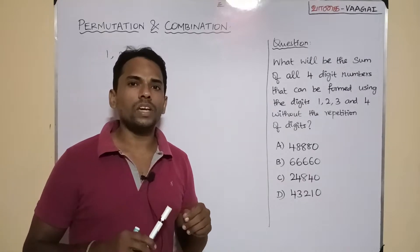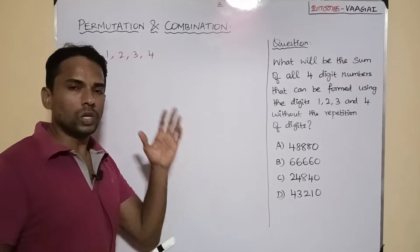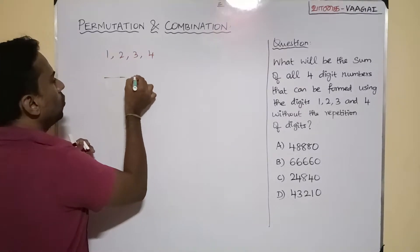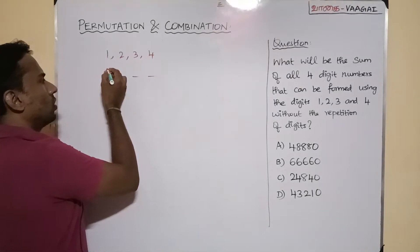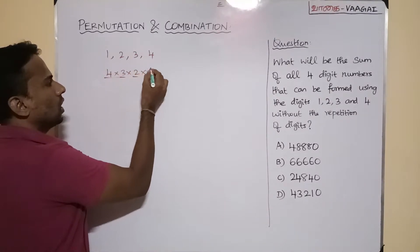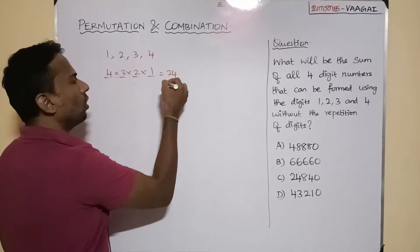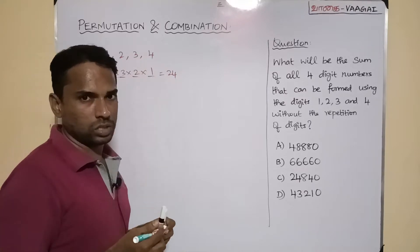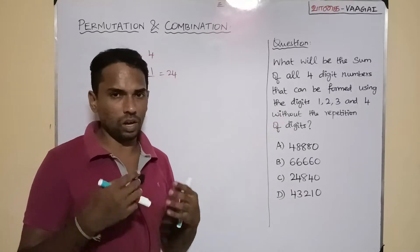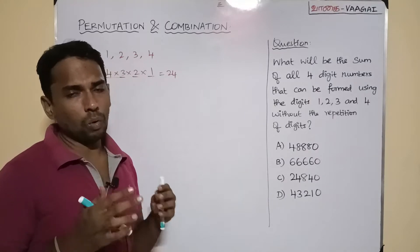It is very easy to tell how many four-digit numbers we can form using these four digits. There are four slots: the first slot can be filled in four different ways, the second slot three ways, the third slot two ways, and the last slot one way. So totally we can form 24 numbers using these four digits — without repeating digits, exactly 24 numbers.